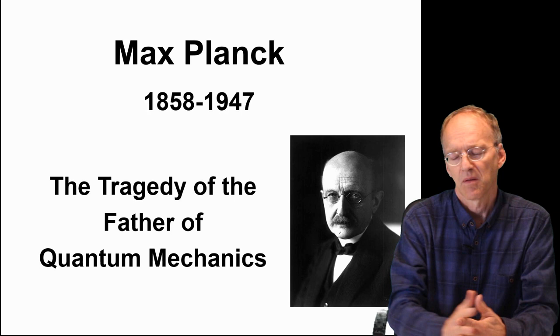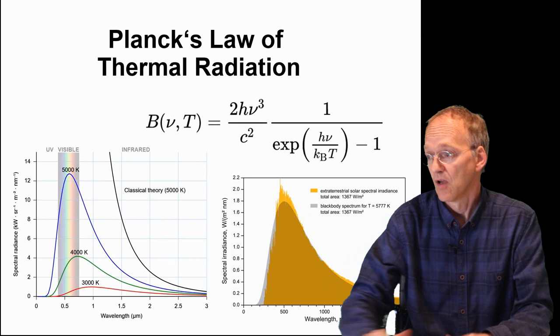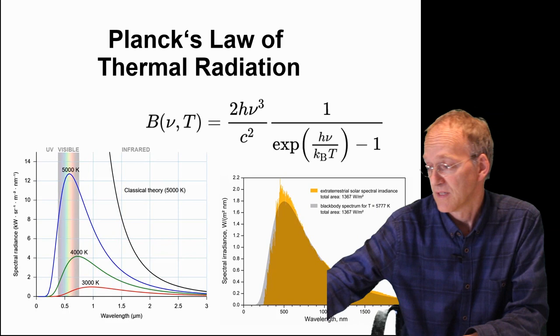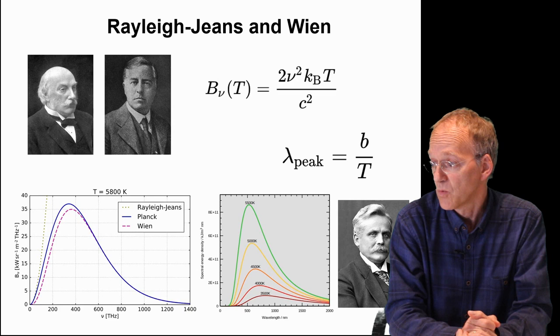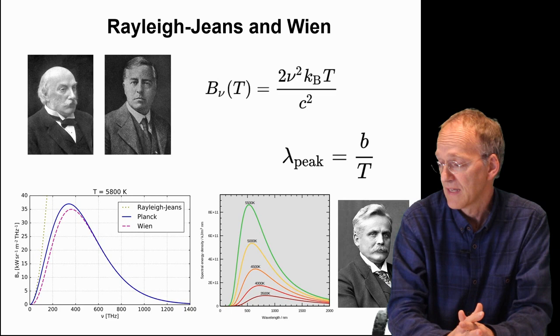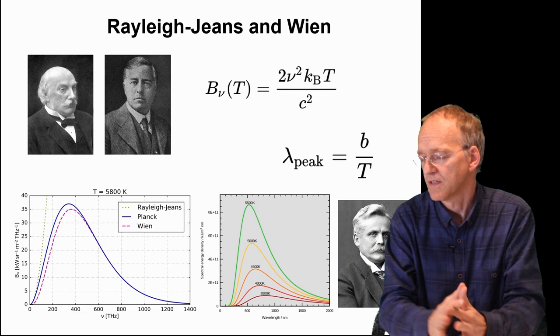What he became famous for is his law of thermal radiation. This is the formula and it's important because our Sun emits this particular black body spectrum. There were predecessors like Rayleigh-Jeans and Wien who had also described black body radiation, but the Rayleigh-Jeans formula had a problem called ultraviolet catastrophe, and Wilhelm Wien's formula was very useful but quite primitive.